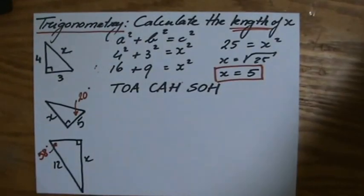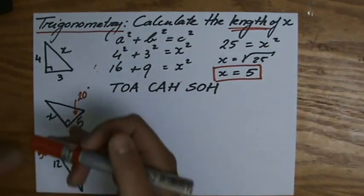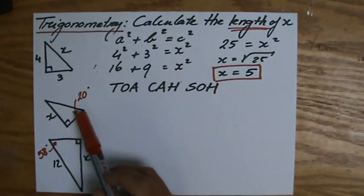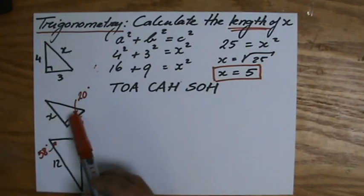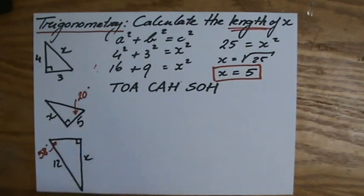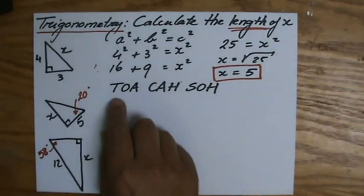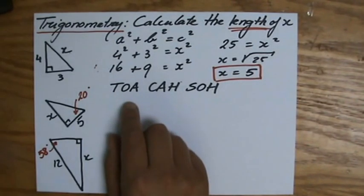Now, back to the question. If I'm standing in my angle, what do they know? What do they give me? They give me my opposite. They give me my adjacent. Then I look for the correct ratio. Which one has opposite and adjacent?